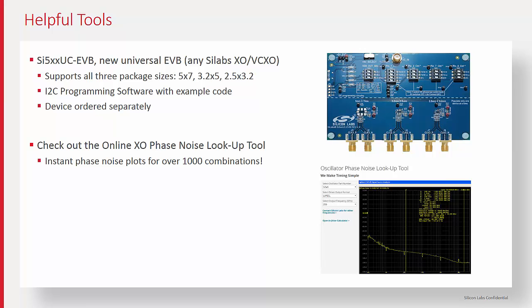This is really useful. I haven't seen any other oscillator vendors have this. We get a lot of requests from customers wanting to know what their phase noise plot is going to look like for their particular device, and this makes it very easy for them to do that. And because it's web-based, you can even check this out on your phone. If you happen to be in a meeting and a customer needs the information, you could pull it up on your phone right there and show it to them.